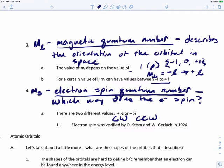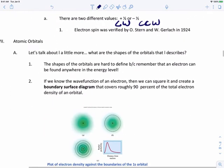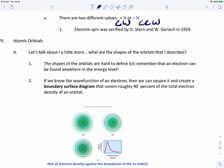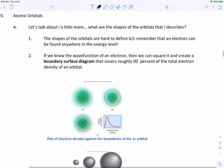So now that we talked about quantum numbers, let's talk about the atomic orbitals a little bit more. So what are the shapes of the orbitals that L describes? Those shapes can be hard to define because an electron can be found anywhere in the energy level. But if we know the wave function of the electron, then we can square that and create a boundary surface diagram that covers roughly 90% of the total electron density of an orbital.